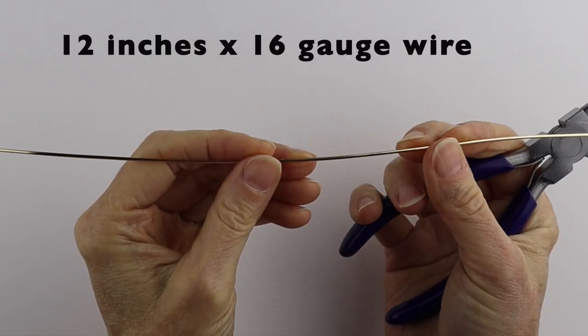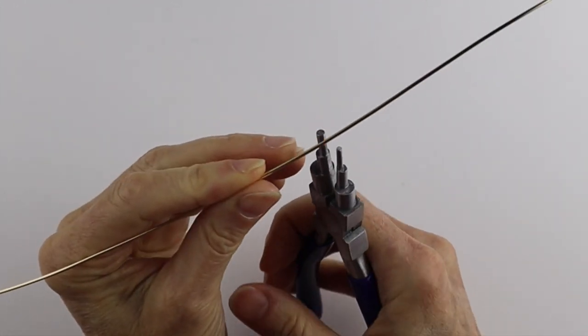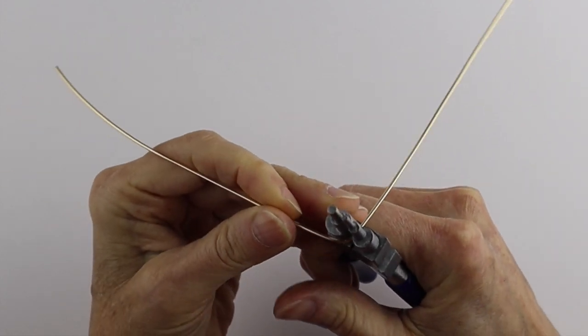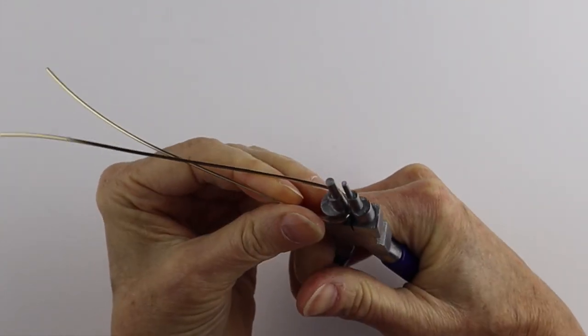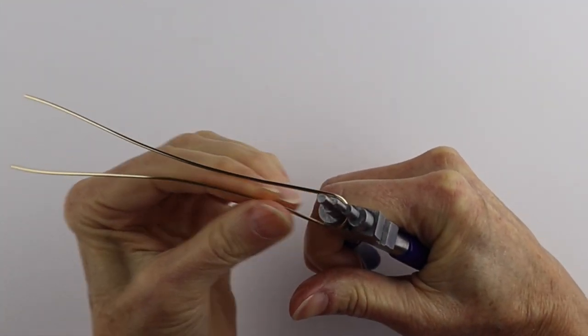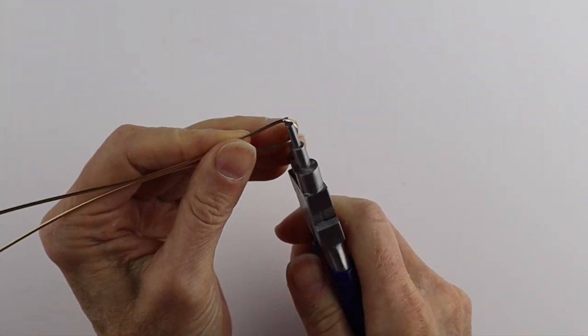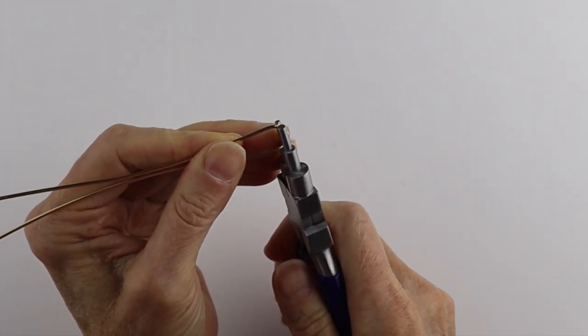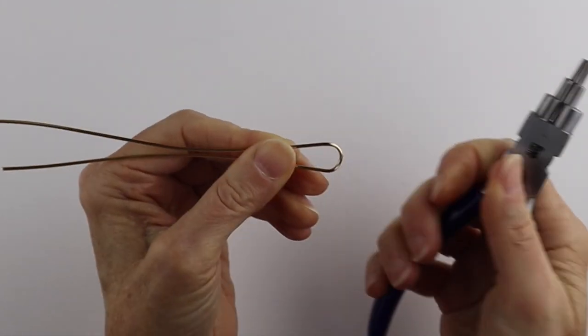So I'm going to start with a 12 inch piece of 16 gauge wire. Just on the largest part of the looping pliers, I'm going to bend this back like that. Now if you don't have looping pliers, you can use the end of a pen or a sharpie. That's not a problem at all. And then you can just take the end and we just want to curve the end just a little bit, just a teeny little hint of a curve.